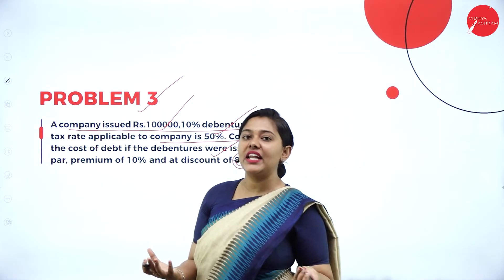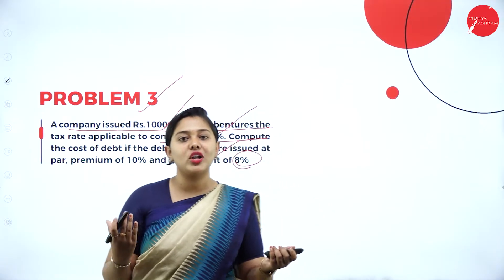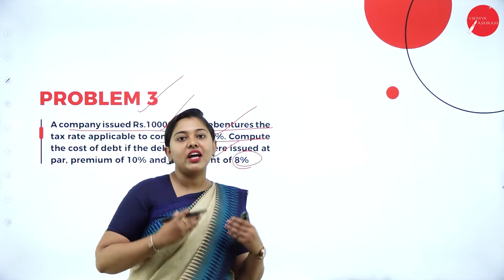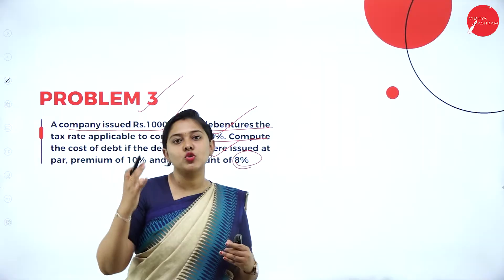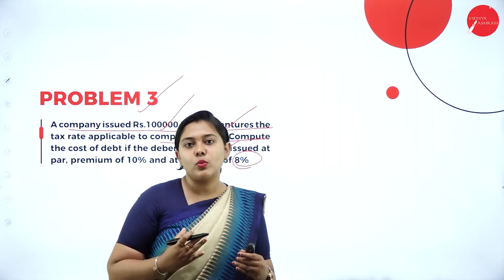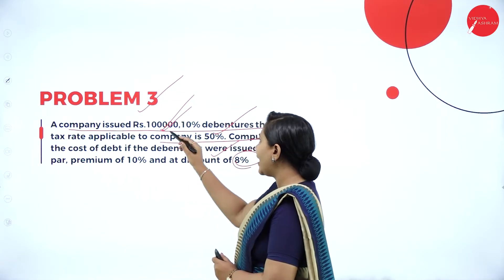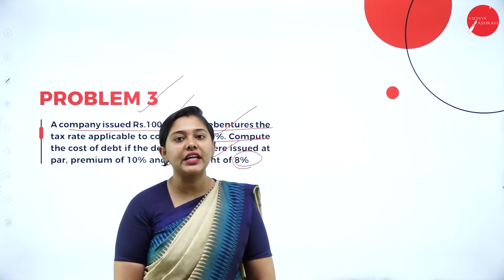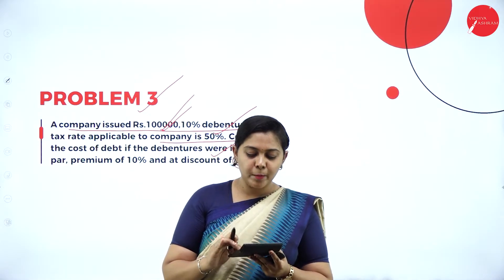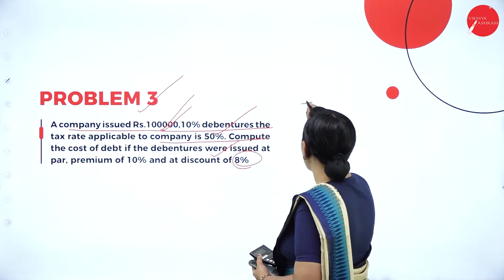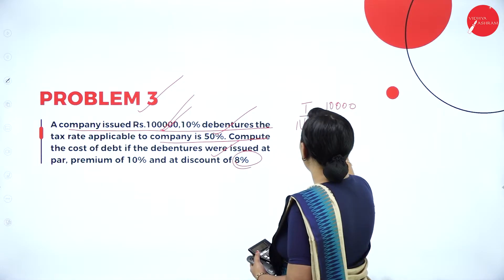Here, the net proceeds — meaning the face value — is not directly given, but they have given the total amount of issuance: 1 lakh. In your examination, whenever the face value is given, you take net proceeds as the face value. But whenever face value is not given, you take the amount given. So, 1 lakh into 10% = 10,000. Interest is 10,000 and net proceeds is 1 lakh.